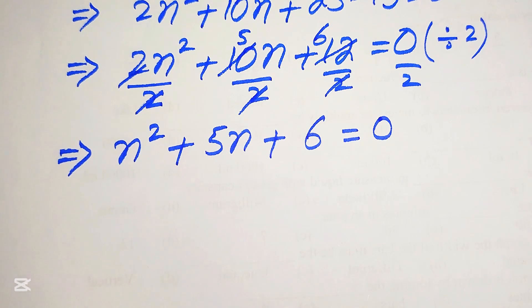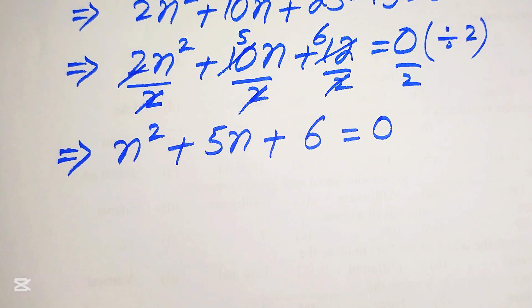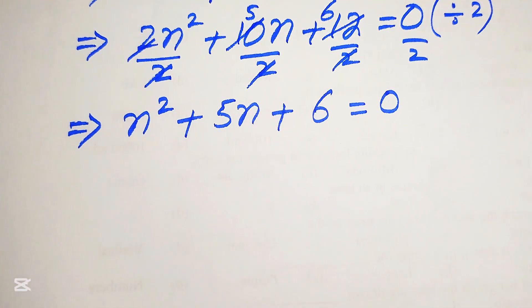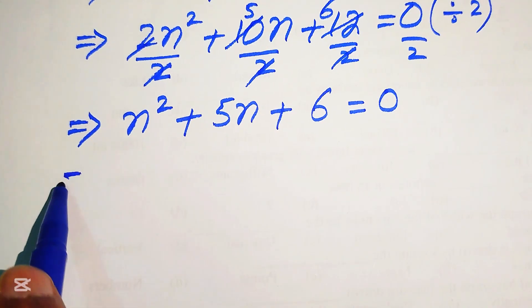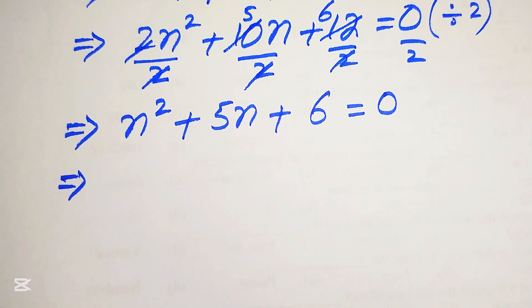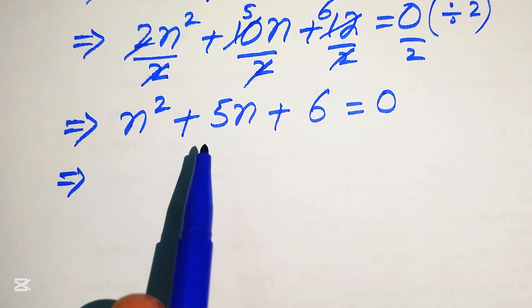After simplification we have a quadratic equation in n. There are three methods to solve a quadratic equation: factorization, completing the square, and the quadratic formula. We will apply the factorization method and break the middle term. We need two numbers whose product is 6 and whose sum is 5.